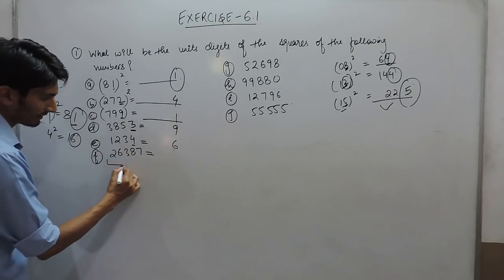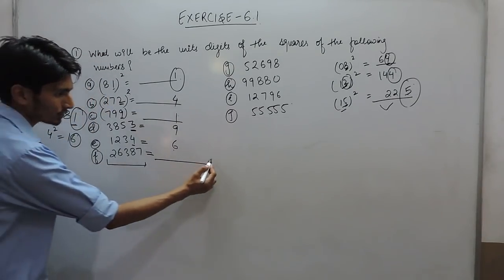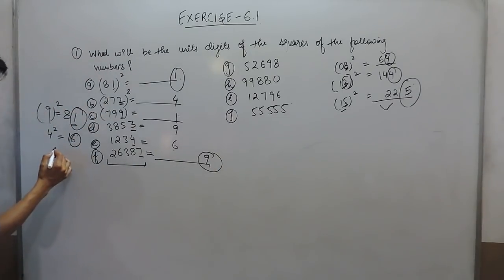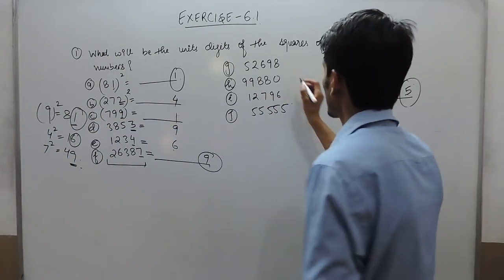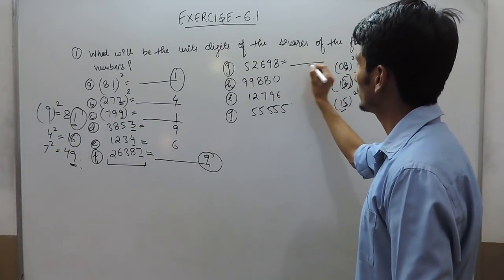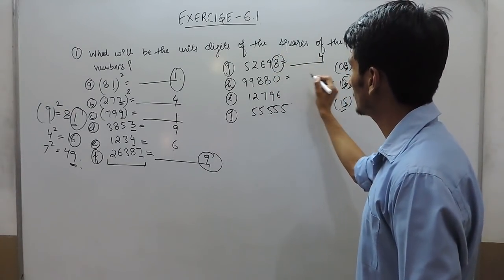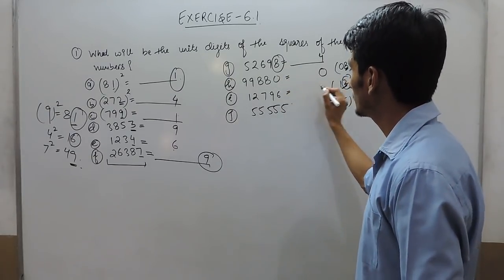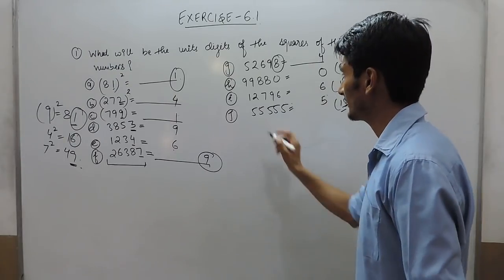Same case with this number: when squared the unit digit will be 9, because 7 squared is 49. The unit digit will be 4 for the next number. Here the unit digit will be 0 because the square of 0 is 0. This would be 6, and this would be 5.